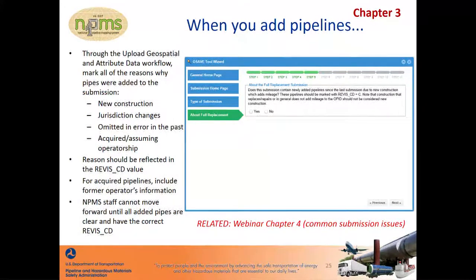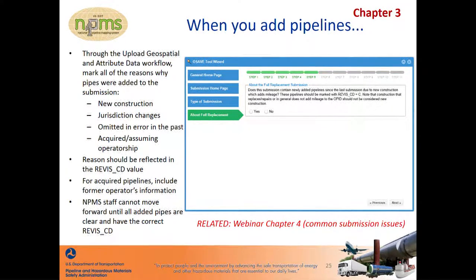Another series of questions in the Upload Geospatial and Attribute Data workflow relate to pipelines that are new to the OPID in this year's submission. There are four scenarios when this applies. One is that pipelines are newly constructed and went into service — NPMS defines new construction to occur when mileage is added to the OPID or a pipeline is rerouted; these are marked as revision code C. A portion of the pipeline that is repaired or replaced in the same location is not considered to be new construction. Another reason pipelines may be added is because they've changed in classification and are now qualified to be submitted to the NPMS — for instance, a pipeline previously operated as a gathering pipeline is now operated as a transmission pipeline; these are marked as revision code J. Pipelines excluded from the NPMS submission in the past in error and now being included as a correction are marked as revision code A. Pipelines acquired from or where operatorship was assumed from another OPID are also marked as revision code A. You will be prompted to supply information about the former operator.